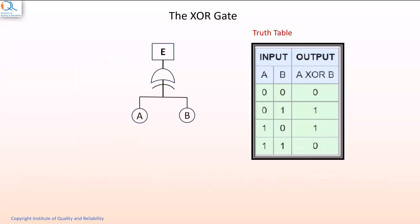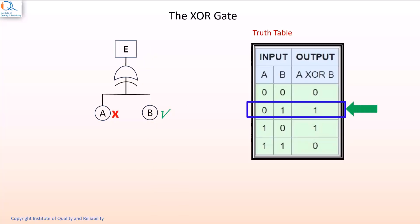Let us understand the truth table of an XOR gate with two lower level events A and B and one top level event E. When A and B both do not occur, the top level event E also does not occur. When one of the lower level events, for example B occurs, but A does not occur, the output event E will occur.